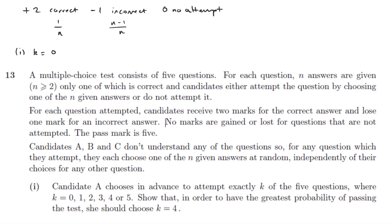Firstly we need to notice that if we start with K equals zero, one, or two, the maximum possible score we can get is two, so if the pass mark is five, then actually the probability of passing this test is going to be zero for those options.